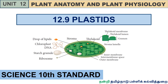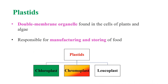Hello students, welcome to ASSAN YouTube channel. Today we are going to study about plastids. Plastids are double membrane organelles found in plants which are responsible for manufacturing and storing of food.